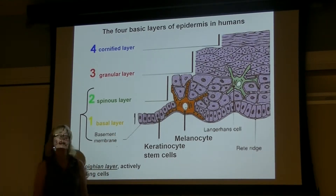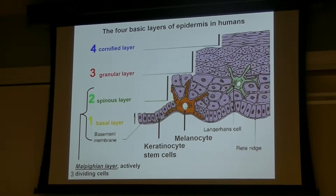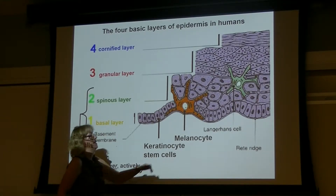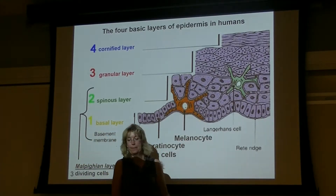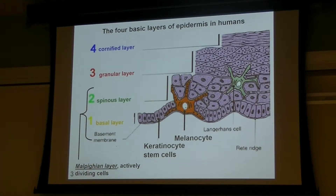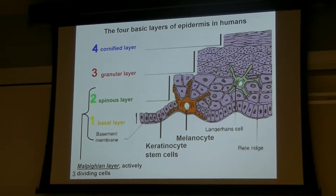These cells are down here. You can recognize them in sections because they're sort of cuboidal shaped. After they start dividing, they're going to move gradually outward into more exterior layers in the epidermis. The next layer is called the spinous layer, so-called because of the shape of the cells, which start to become more irregular and have these little protrusions or spines to them.